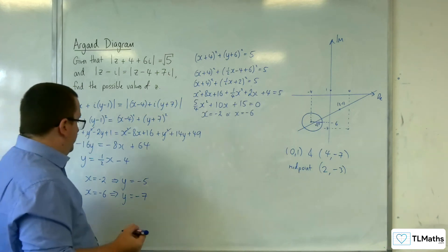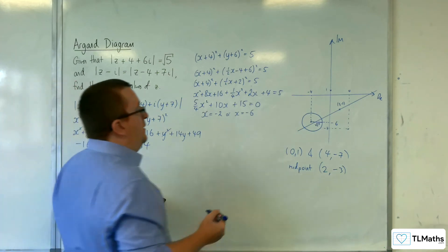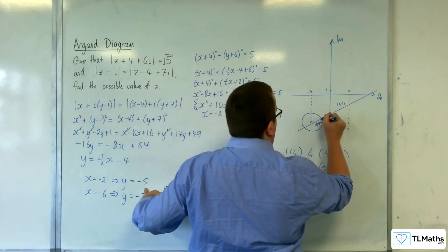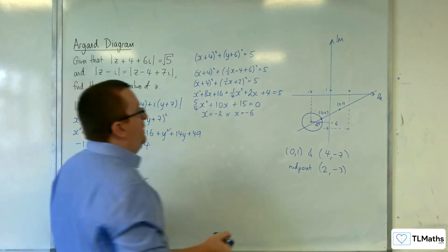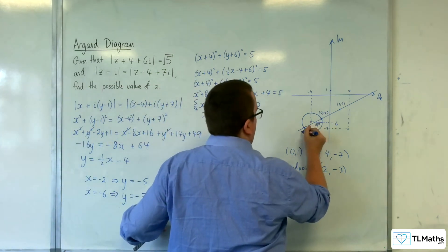So they are 2 points. So minus 2, minus 5, is that one there. And minus 6, minus 7, is that one there.